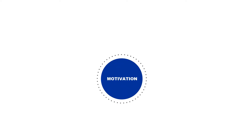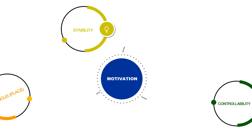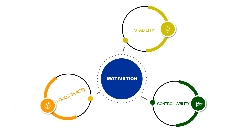These attributions are also associated with our motivation, and they differ in three ways. First, locus or place. Second, stability. And third, controllability.